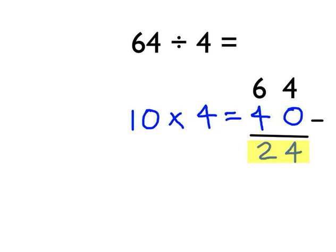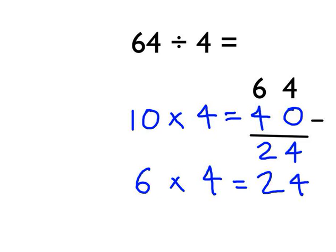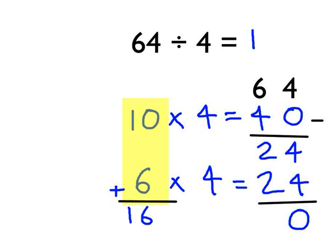With the 24 that's left, I know how many times 4 goes into 24 from my times tables — 6 times 4 is 24. If we take that 24 away from the 24 above it, we're left with 0, and that tells us we've reached the end of our chunking. The most important thing is this column here — it tells us how many times 4 went into 64. We add up this column: 10 add 6 is 16. So our answer is 16. 4 went into 64 sixteen times.